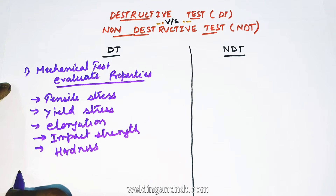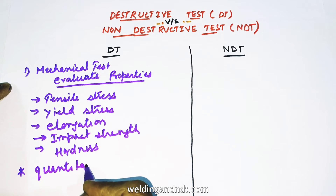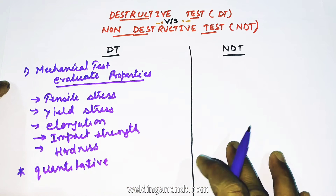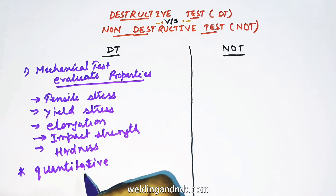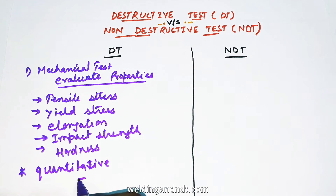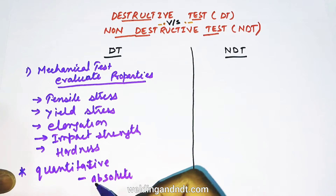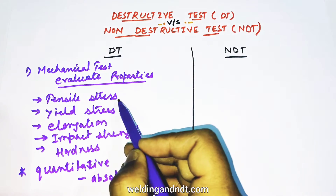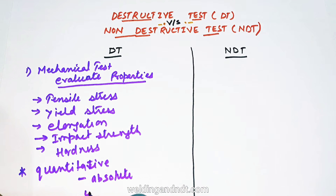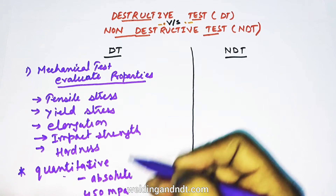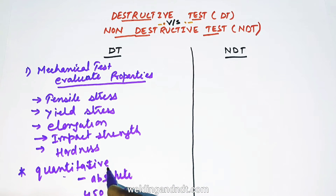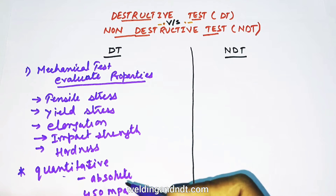One more thing — destructive tests are quantitative in nature. Quantitative means these tests give you an absolute figure or value. For example, if you perform a tensile test, you will get tensile strength in megapascals, like 450 MPa. Most destructive tests give such an absolute value.